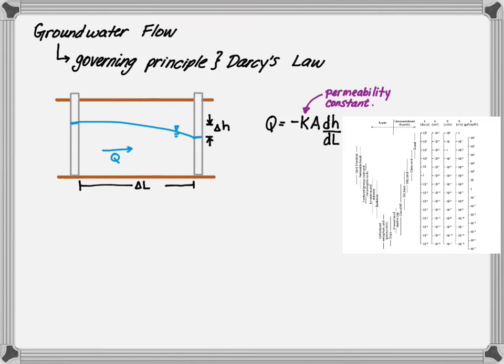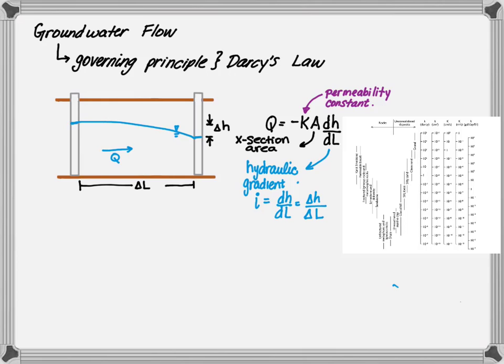K is called the permeability constant. This is based on experiments where we have evaluated the ground soil content and determined how the water moves through it. dH/dL represents the hydraulic gradient, sometimes referred to as I — it's dH over dL, or in our case delta H over delta L. And A is your cross-sectional area that the water sees, perpendicular to the flow.